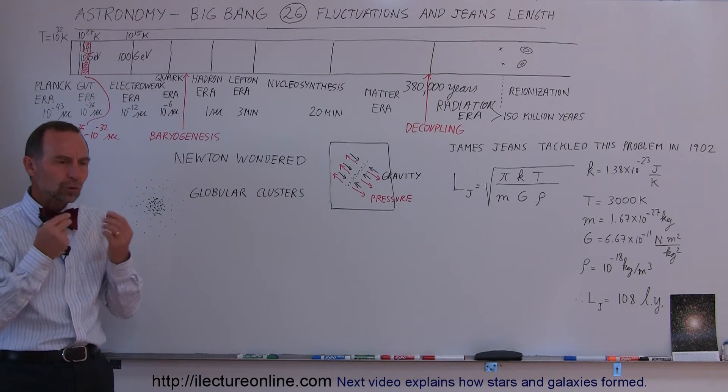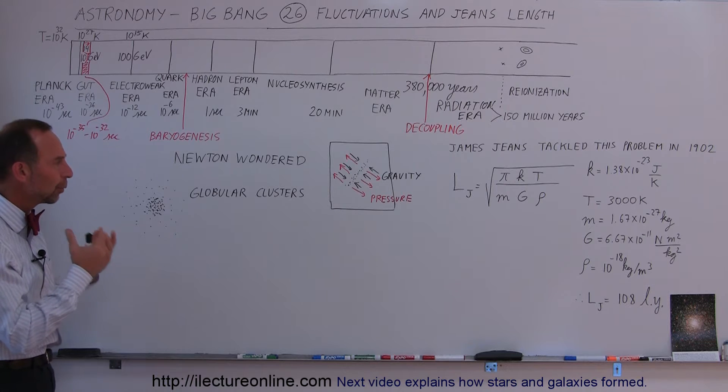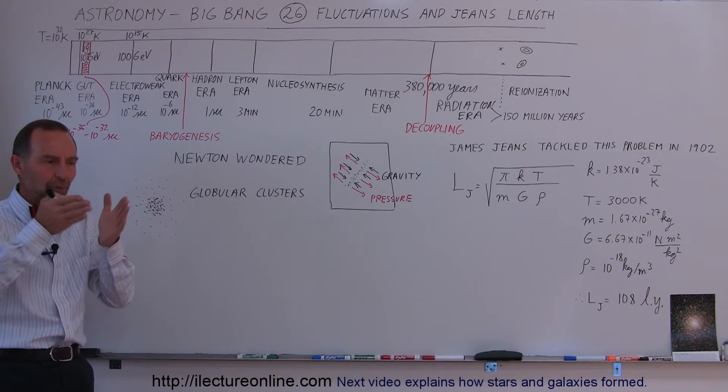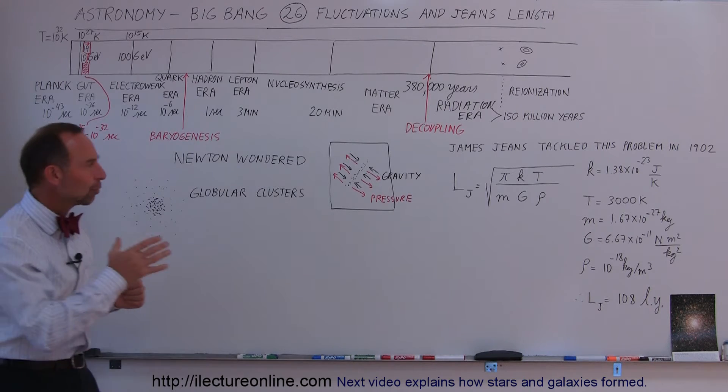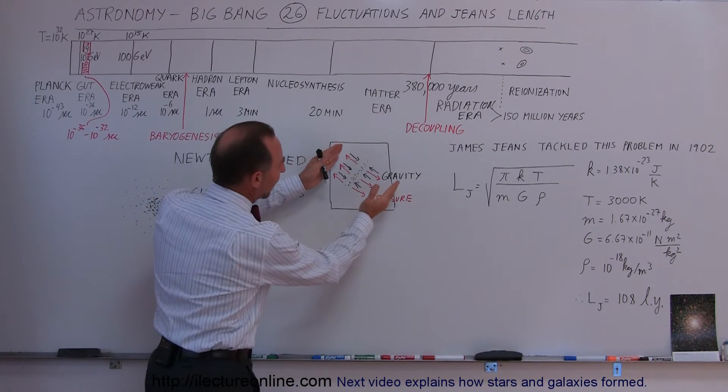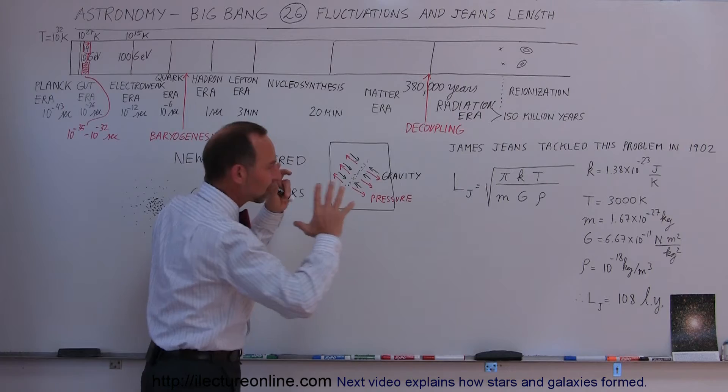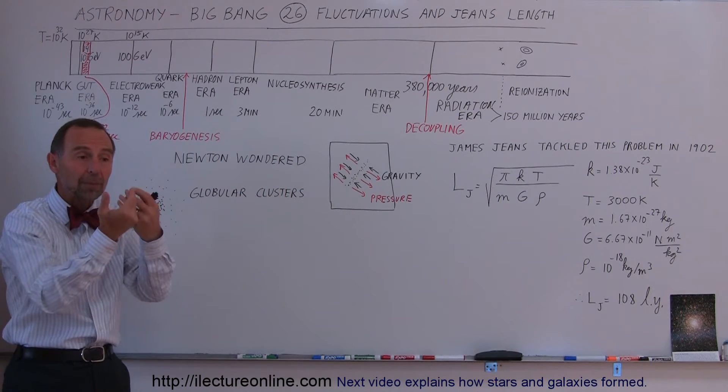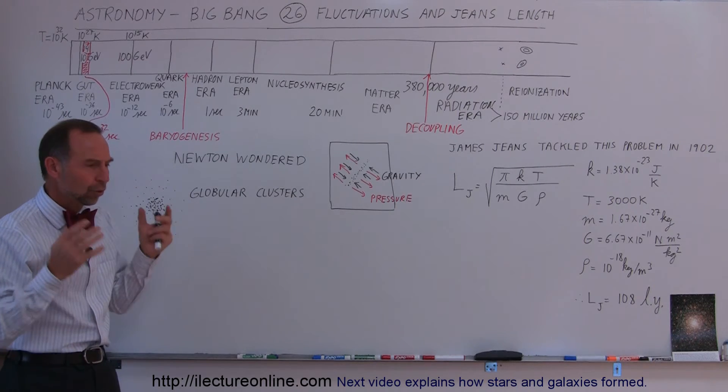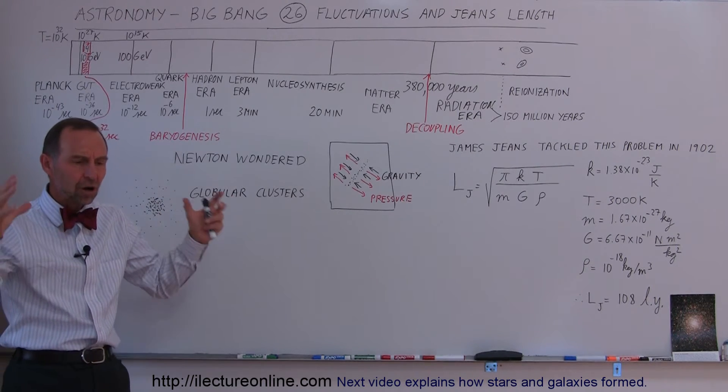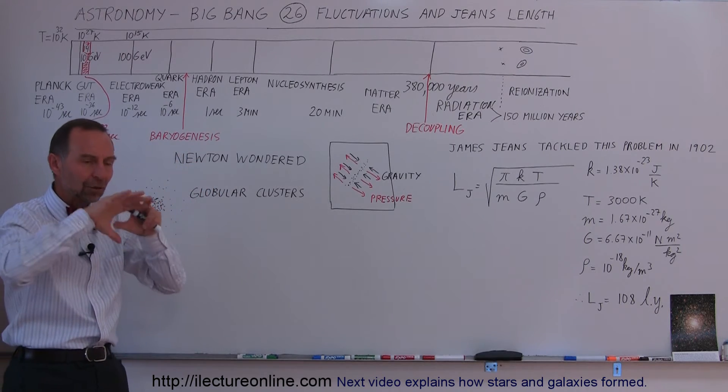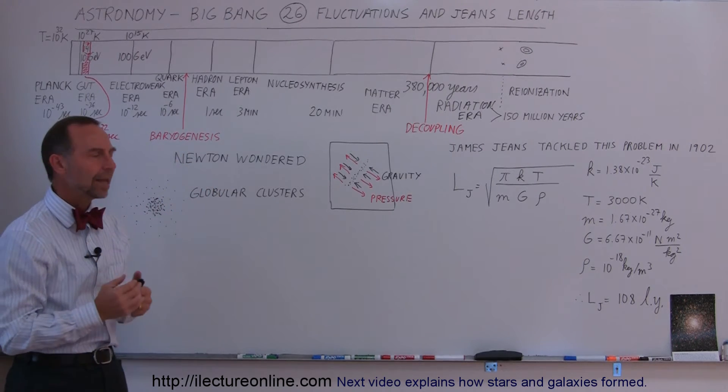Because hundreds of years ago Newton already tackled this problem trying to wonder how can we reconcile how gas can turn into something solid. How much force of gravity is required to put gas molecules together, because as gravity pushes gas molecules closer together, pressure and heat builds up which then tends to push the molecules further apart. So what would it be in the universe that would actually cause these molecules and these atoms to come close enough together to actually form stars? What would it take?